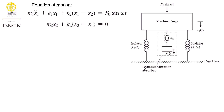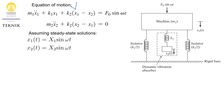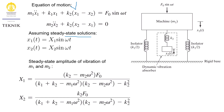Let's start discussing the gist of the concept of vibration absorption. We start with the equations of motion. We now have two mass-spring systems with two equations of motion, and from here, assuming steady-state solutions, we arrive at the steady-state amplitude of vibration of m1 and m2. Because we have two masses, we have two equations: x1 and x2.